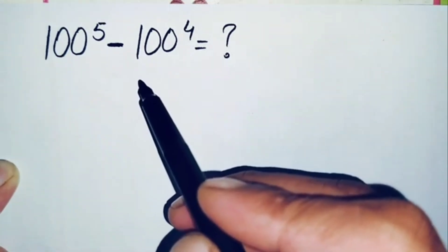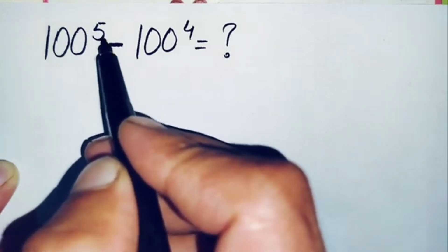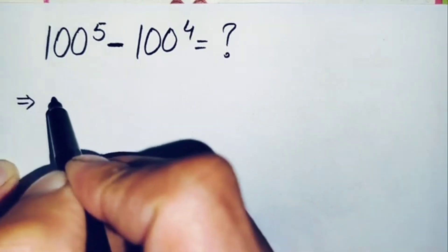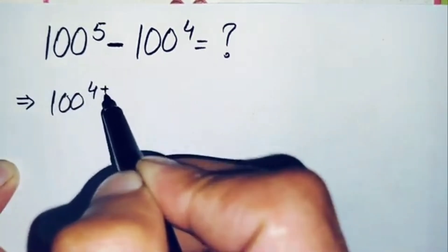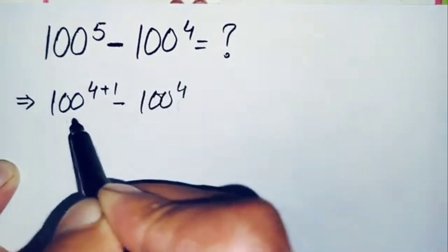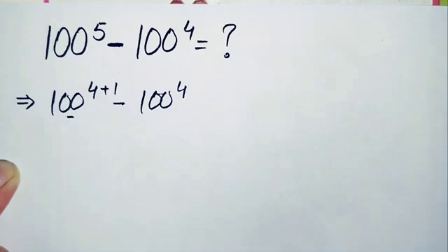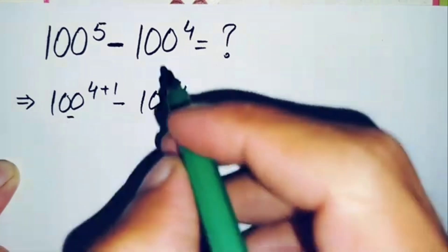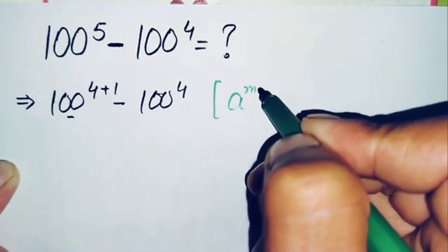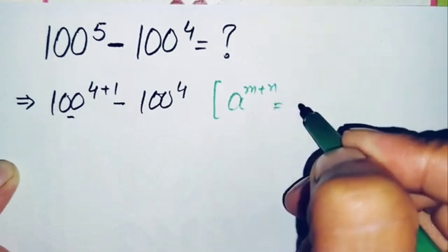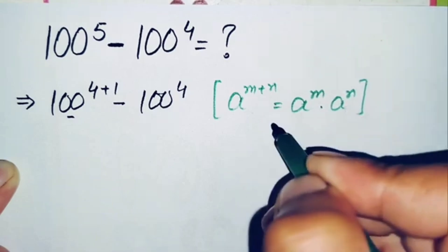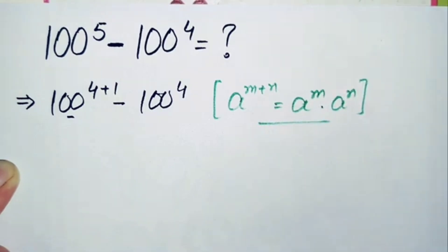To solve this problem, we will first change the power 5 to the sum of 4 plus 1, so this equation will become 100 to the power 4 plus 1 minus 100 to the power 4. In this first term we will use the exponential math property: a raised to the power m plus n, which can also be written as a to the power m times a to the power n.